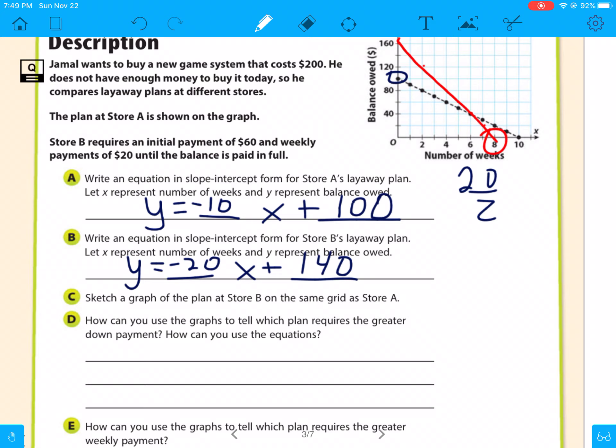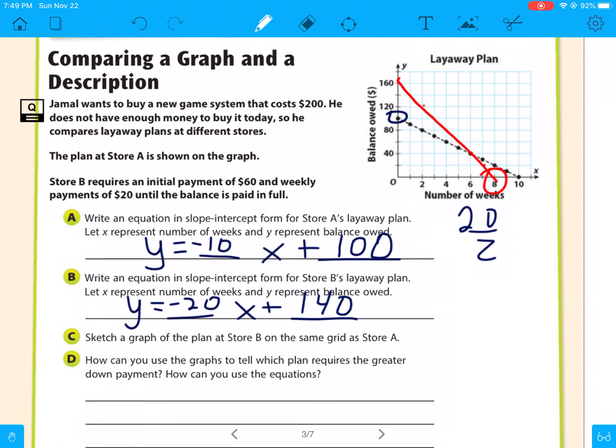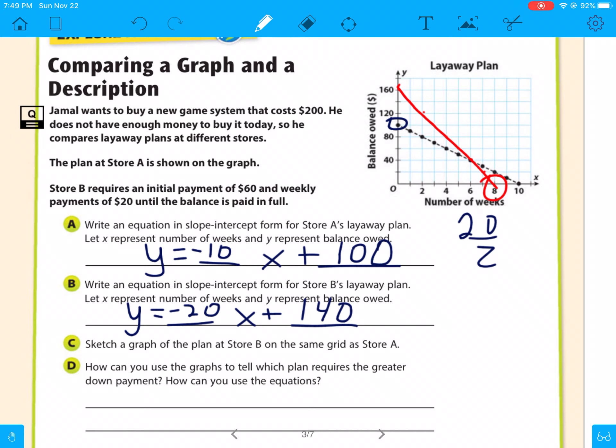So how can you use the graphs to tell which plan requires a greater down payment? That's your y intercept. So it looks like store A has a greater down payment because you have to pay $100 on that. Store B, you only have to pay $40. Now the equations, $100, that's what's left of the $200. And then $140 is what's left of the $200 because you have to put $60 down.